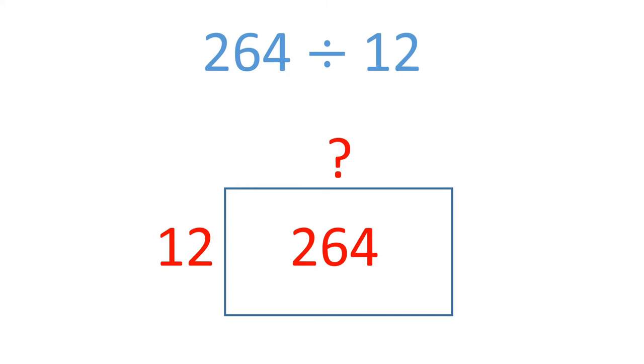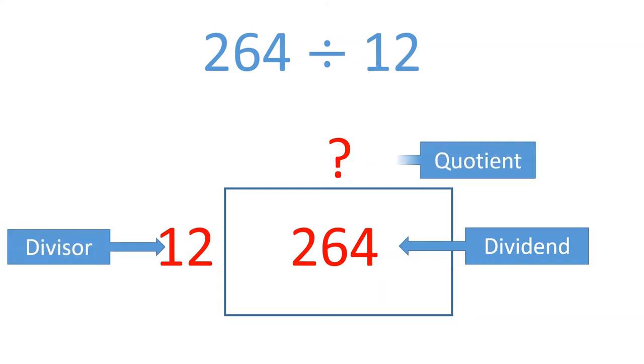If I label it using division terms, this is the dividend, this is the divisor, and this is the quotient, which looks very similar to the traditional long division box.